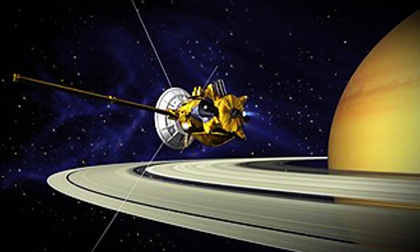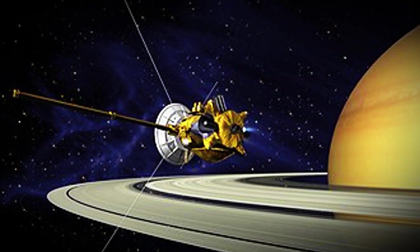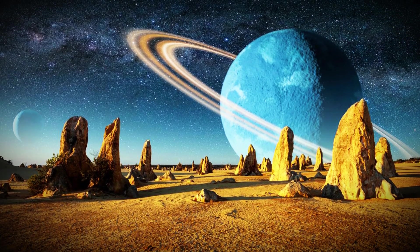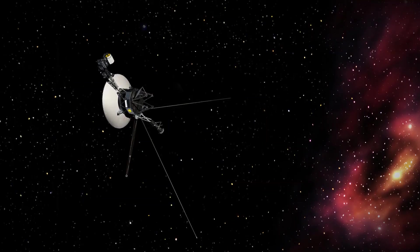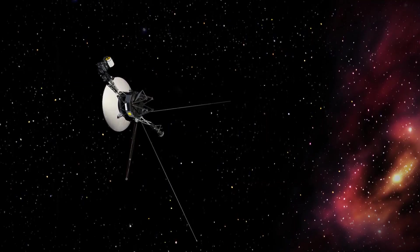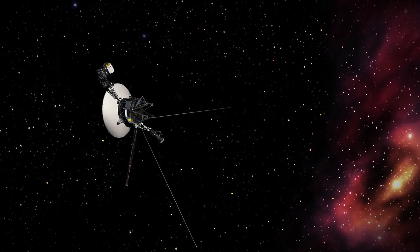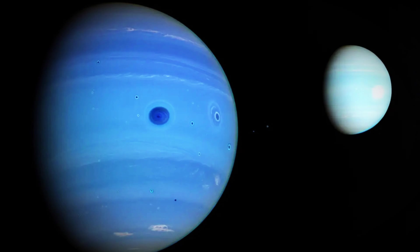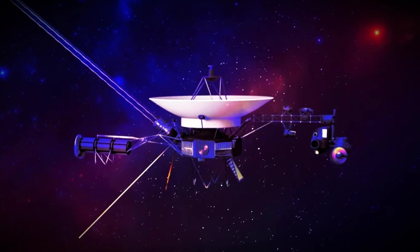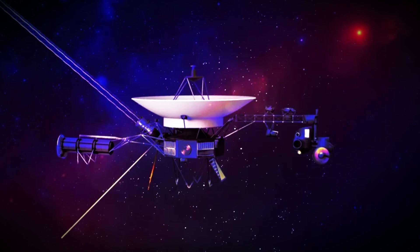In this endeavor, the two probes worked in tandem, with Voyager 2 arriving at Saturn in August 1981 and further enhancing the research on the planet. The data collected by Voyager 2 helped answer questions that had arisen following Voyager 1's journey. Voyager 2 then continued its mission, heading toward Uranus and Neptune, while Voyager 1 began its path on an orbit leading it to the outer reaches of the solar system.